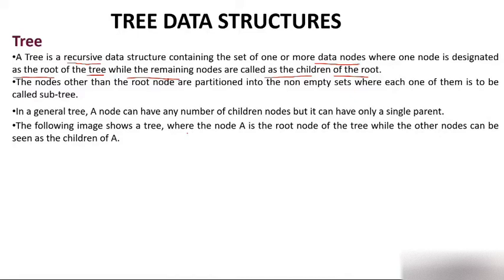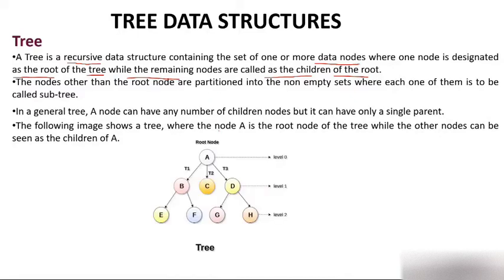In the following image, node A is the root node — the top node of the structure. The other nodes can be seen as children of A, while T1, T2, and T3 are called sub-trees. The root is at level 0, then the next level is level 1, then level 2 and level 3. The level of root is always 0.